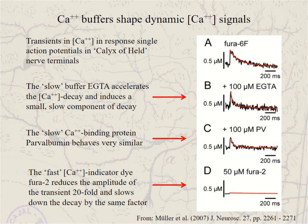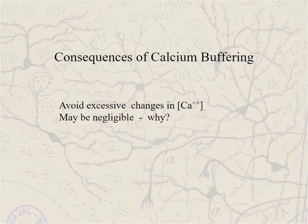If you do the same experiment with parvalbumin, which is also a slow calcium buffer, you see a very similar response. However, if you bring in a fast buffer like the calcium indicator di-fura-2, then the uptake by Fura-2 happens in the millisecond and submillisecond range. As a consequence you see only a very small increase in calcium, but if you look at this in expanded amplitude scale, this tiny increase decays very, very slowly back to baseline. Quantitative analysis shows that the amplitude of this calcium transient in the presence of 50 micromolar Fura-2 is reduced by about a factor of 20, while at the same time the decay of the signal is slowed down by a factor of 20. So the area under the transient actually stays constant and is not influenced by the presence of the buffer.